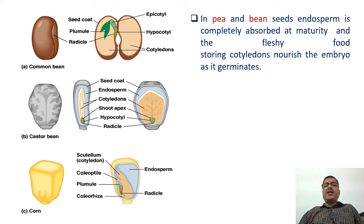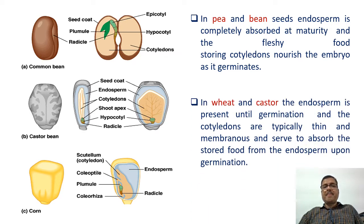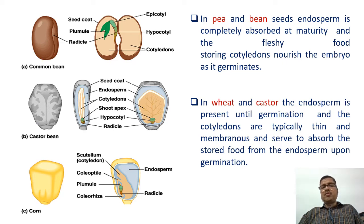In pea and bean seeds, endosperm is completely absorbed at maturity and fleshy food-storing cotyledons nourish the embryo as it germinates. In wheat and castor, the endosperm is present until germination and the cotyledons are typically thin and membranous, serving to absorb the stored food from the endosperm upon germination.